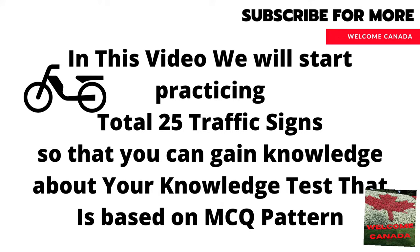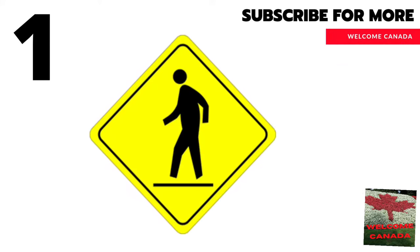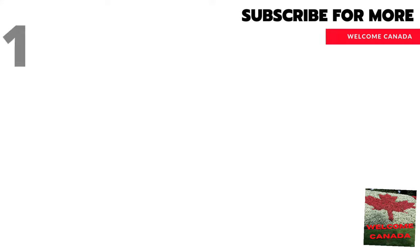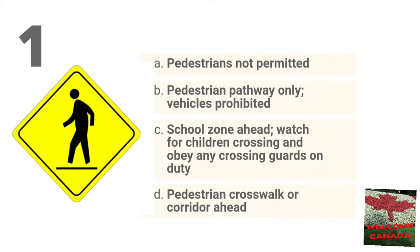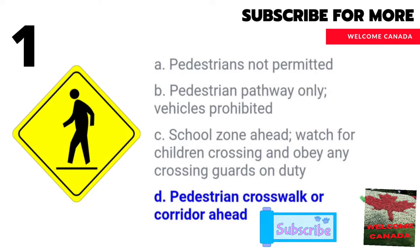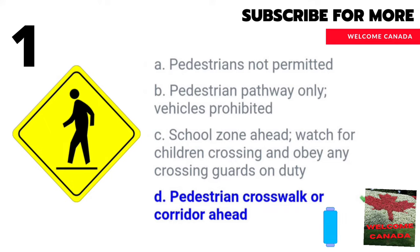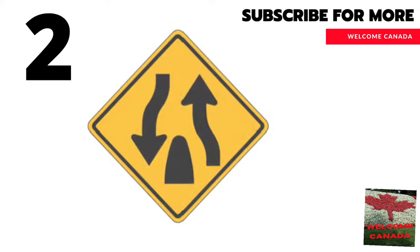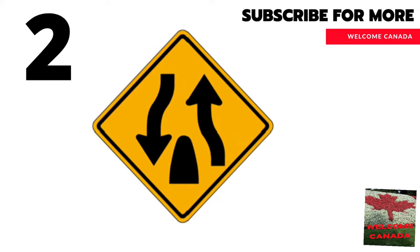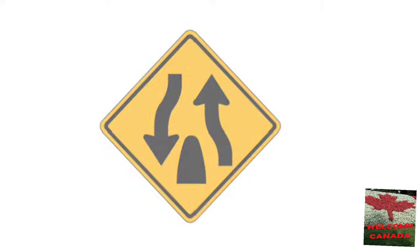In this video we will practice 25 traffic signs that can help you in your knowledge test for a driving license in Canada. The first sign — choose your option. The right answer is D: pedestrian crosswalk or corridor ahead. Now the second sign — choose your option. The right answer is: a divided highway ends.